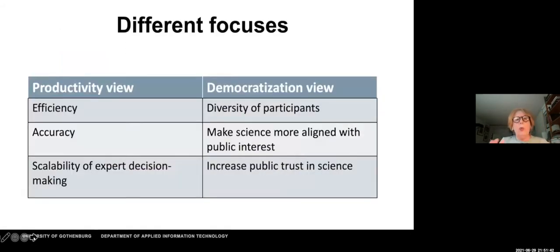We have different focuses, depending on which view you take. The productivity view focuses on performance, on efficiency and accuracy, for example, of classification of millions of images. Like in projects, think about astronomy projects, like gravity spy or galaxy zoo, and the possibility to generalize and scale expert decision making. On the other side, you have the democratization view where the emphasis is on diversity of participants, for example.